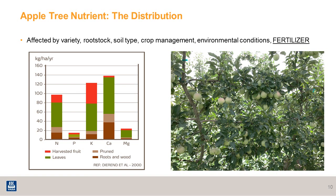It is important to understand how an apple tree distributes nutrients within the plant. Here is a nutrient distribution chart for apples created by Yara. You can see that a lot of the nitrogen went into growing the tree — the roots, the wood, the leaves — and a smaller percentage actually went into the fruit. When we look at calcium, the vast majority went into growing the tree, and only a tiny percentage went into the fruit, which makes calcium a challenging nutrient to get into the fruit.